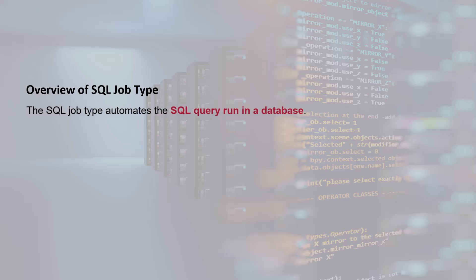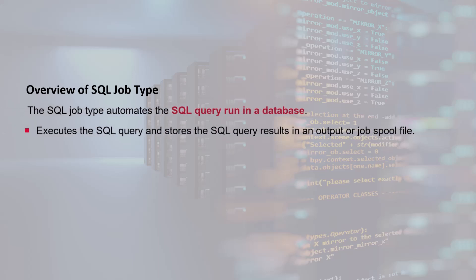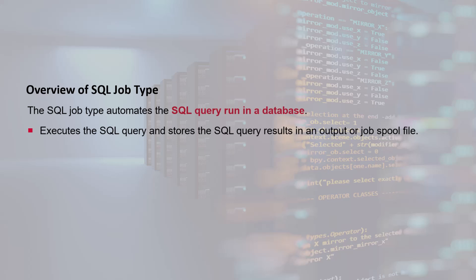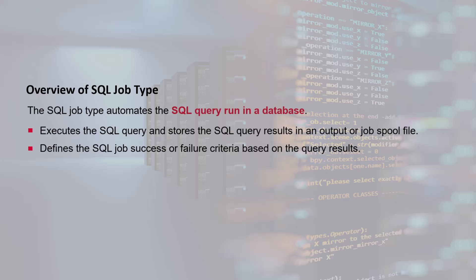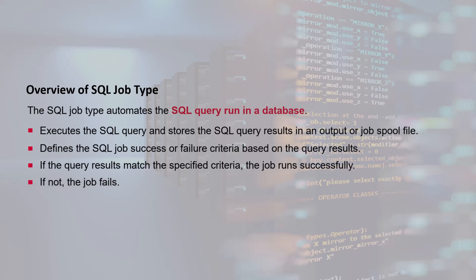The SQL job type automates the SQL query run in a database. On execution, the SQL job runs the specified SQL query and stores the results in an output or job spool file. The SQL job also enables us to use the query results to specify the SQL job success or failure criteria. If the query results match the specified criteria, the job runs successfully; if not, the job fails.